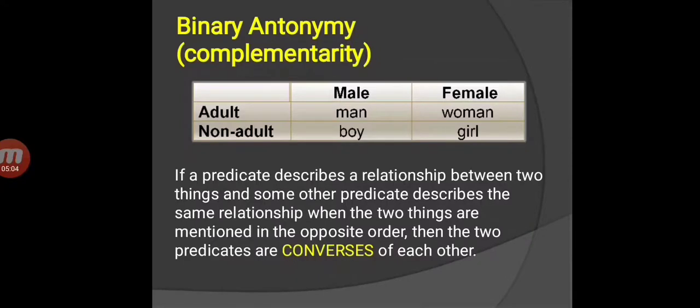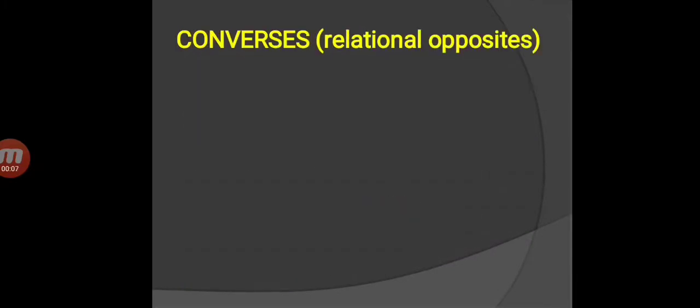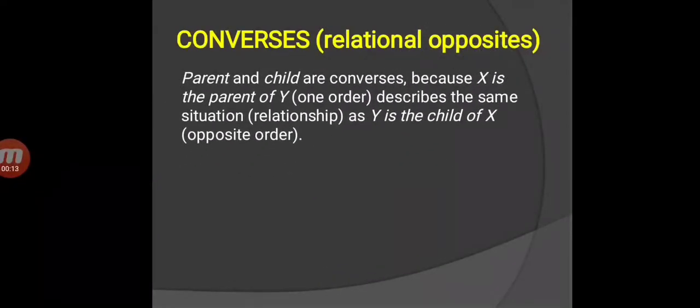If a predicate describes a relationship between two things and some other predicate describes the same relationship when the two things are mentioned in the opposite order, then the two predicates are converses of each other. So converses become the second type of antonymy: converses or relational opposites. For example, parent and child are converses because X is the parent of Y describes the same situation or relationship as Y is the child of X in the opposite order.